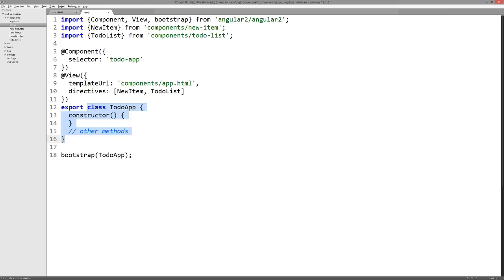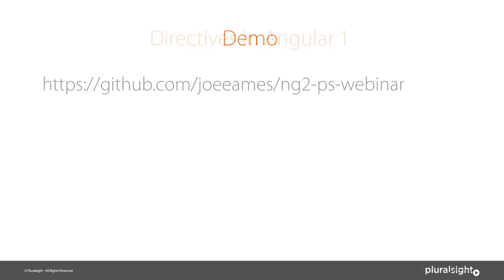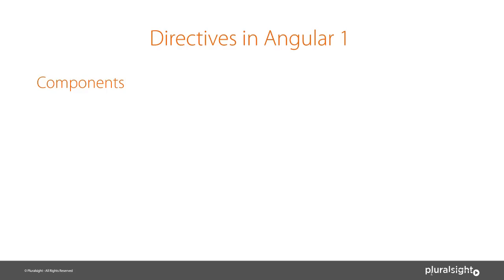So let's talk about what a component is and how it relates to a directive. We're going to talk about directives and components. First, let's talk about directives in Angular 1. There are essentially three types of directives in Angular 1, although nobody really talks about the fact that there are three types. But there really are three types, and as we talk about them, you'll kind of recognize them.